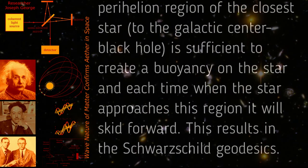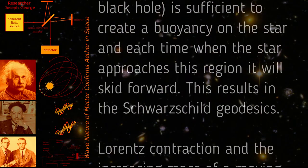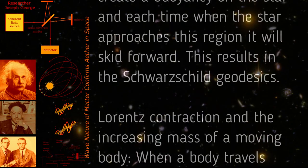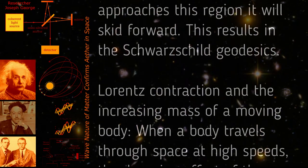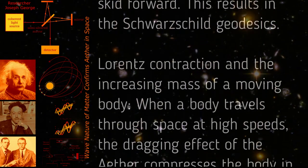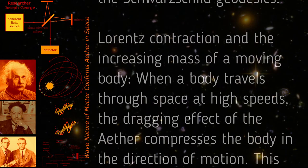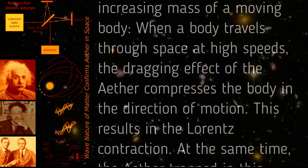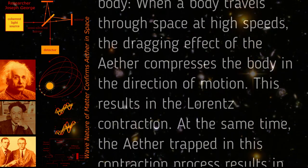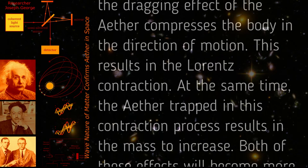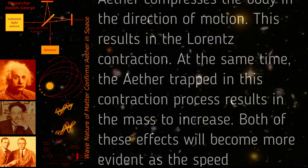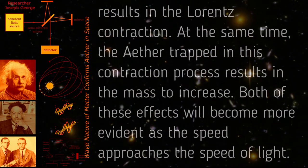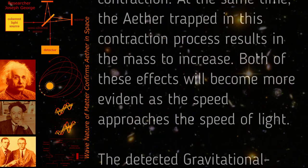Lorentz contraction and the increasing mass of a moving body: When a body travels through space at high speeds, the dragging effect of the ether compresses the body in the direction of motion. This results in the Lorentz contraction. At the same time, the ether trapped in this contraction process results in the mass to increase. Both of these effects will become more evident as the speed approaches the speed of light.